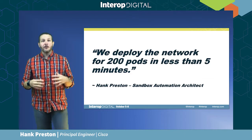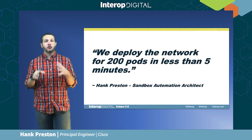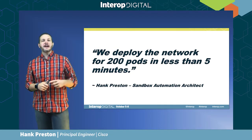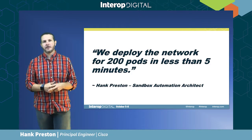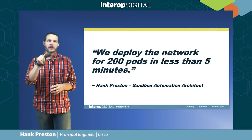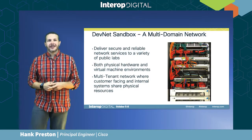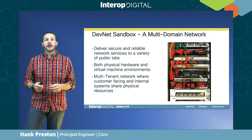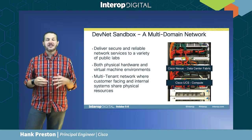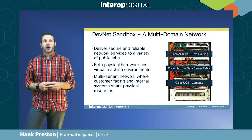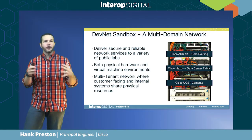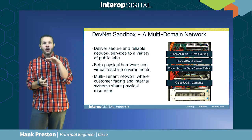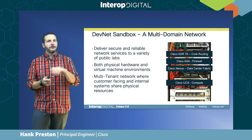Jumping to the end of the story: we have been successful. We're not done and not everything is perfect, but we can now automate the deployment of pod environments — in less than five minutes we can spin up 200 new pod environments, each being a location where one of you may grab a reservation. Our network is a multi-domain network made up of Cisco Nexus data center fabric, Cisco UCS for compute, ASR 1000 for core routing between parts of the data center, and Cisco ASA for Layer 4 firewall services.